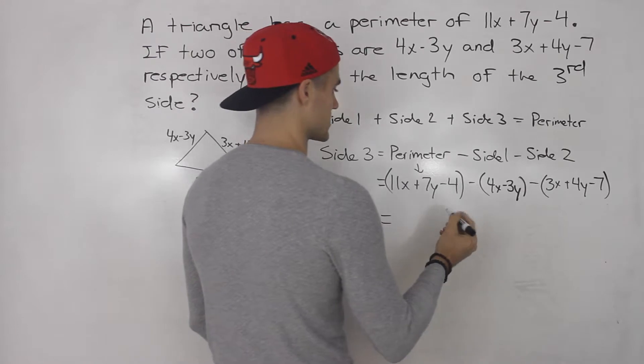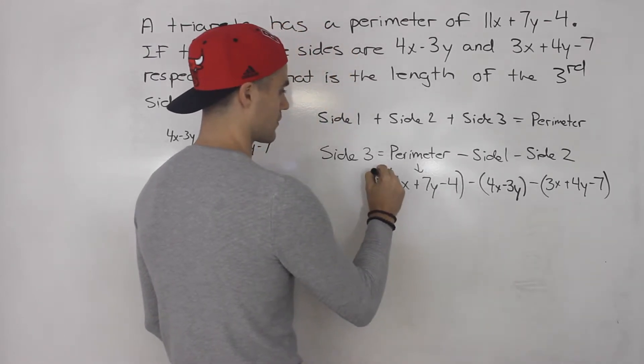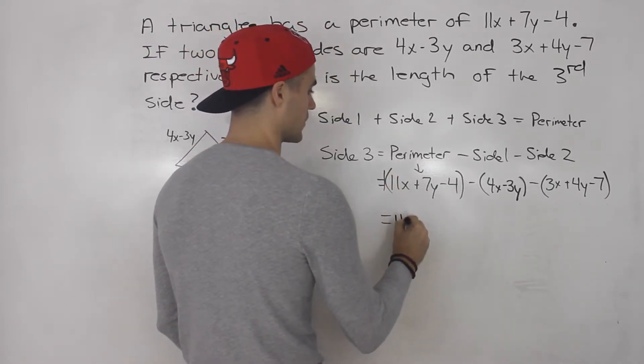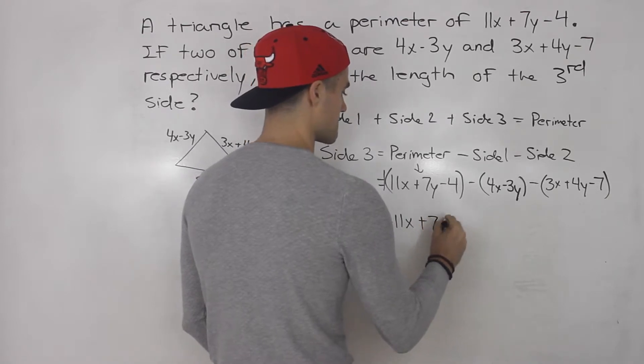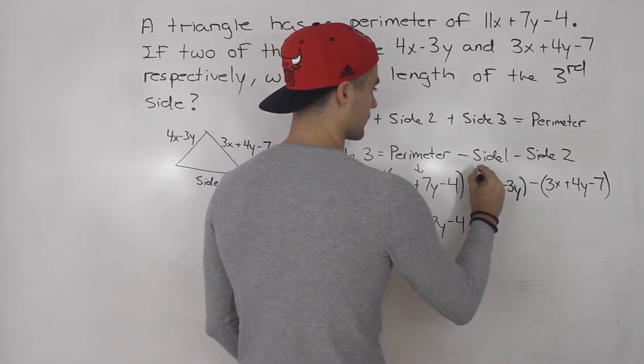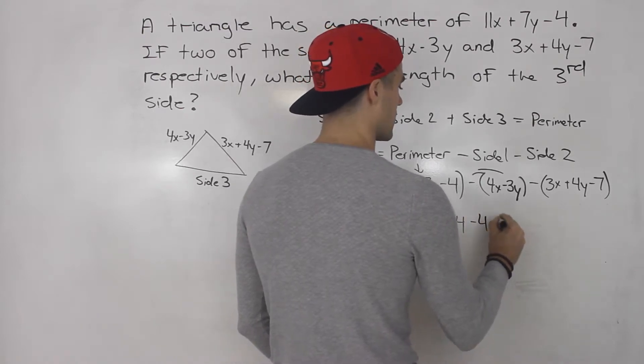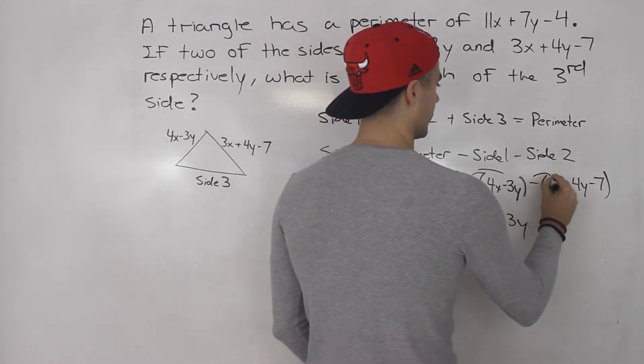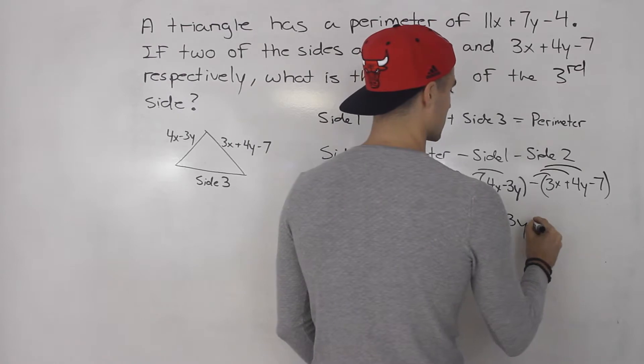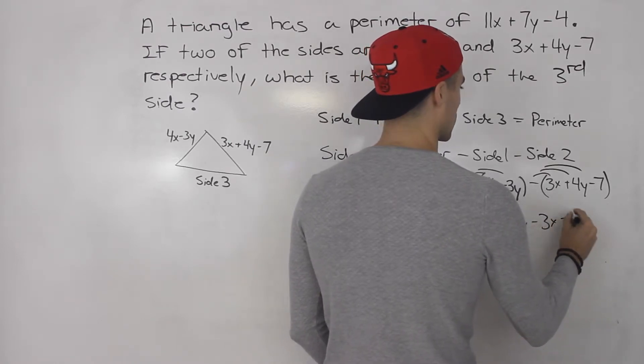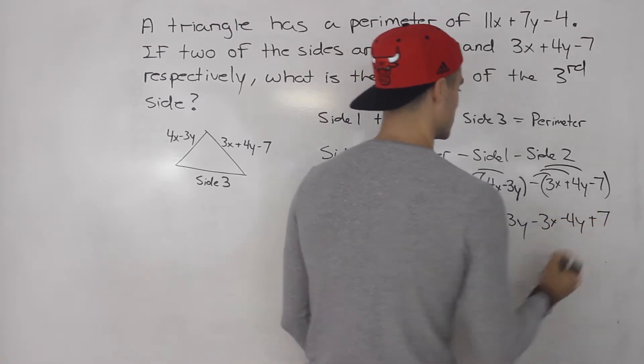Then from here we can just simplify. So there's nothing in front of the bracket here. There's like a 1 so we could get rid of this first bracket. Here we'll have to distribute the negative inside so we'll have minus 4x plus 3y. Then here we'll have to distribute the negative. So minus 3x minus 4y plus 7.